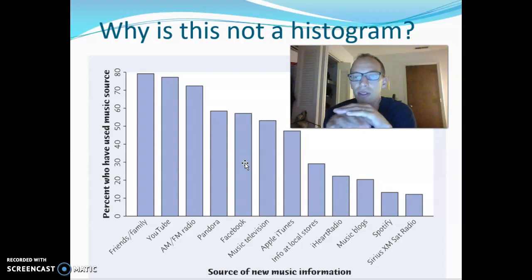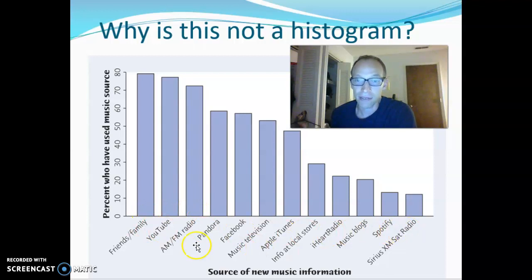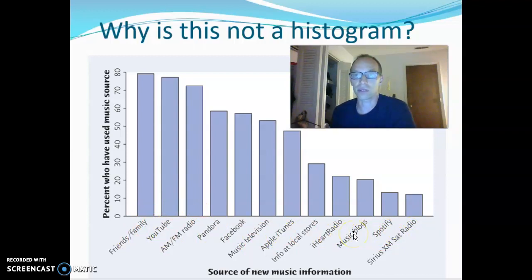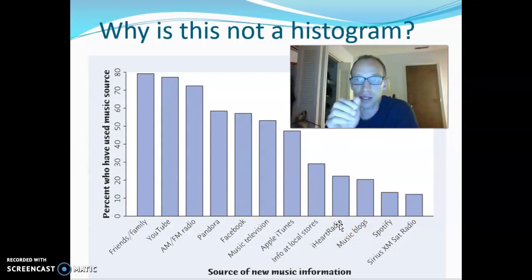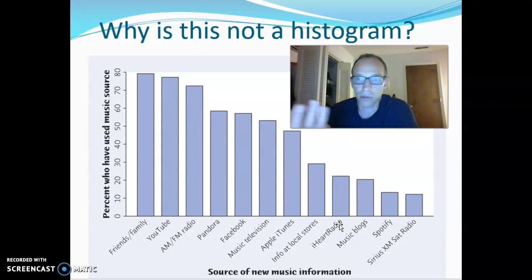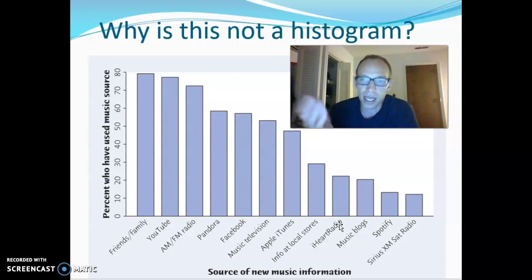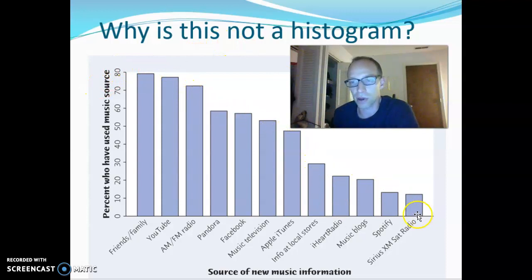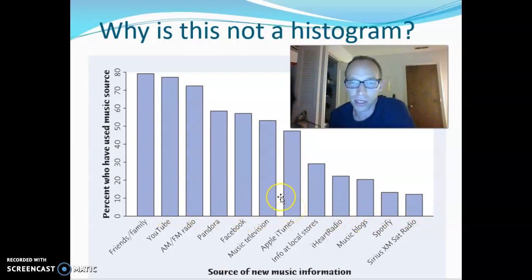The main difference is the variable along the bottom. If it's categorical, like what we see here — we see different categoricals of music information sources — then it's a bar chart. The reason is we could move these around in a different order and it would still be a portrayal of the same data. It's not like there's any downward trend just because we see these bars in a different order. We could easily rearrange these in alphabetical order and it would still be the same.